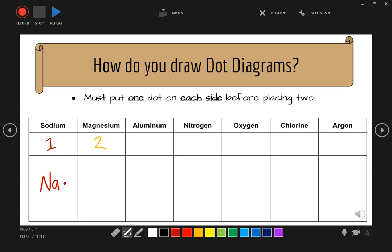Okay, now we do the symbol for magnesium, which is Mg. And it gets two dots. So this is where this bullet becomes important, where you have to put one dot on each side before placing two. So I'm going to place one dot on one side, and then place the second dot on a different side.